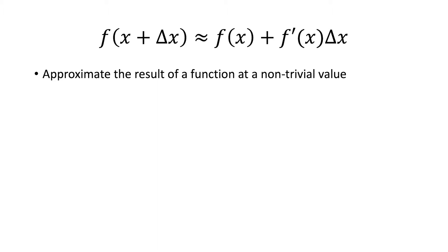This is used to approximate the result of a function at a non-trivial value. For example, if you wanted to calculate the square root of 1.01, you would use √x as f(x), use 1 as your x, and use 0.01 as your Δx, and plug all those values into the equation to get an approximation of √1.01.